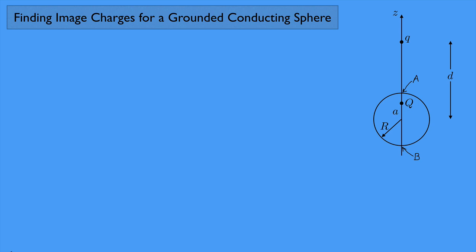You might wonder how I knew to put big Q on the z-axis. By symmetry, big Q has to be here — if I want the potential to be zero everywhere on this surface, it wouldn't make sense to have it elsewhere. Also, I can't put the image charge outside the sphere because I'm trying to calculate the potential outside the sphere, and you can't put image charges where you're trying to calculate the potential. So it has to be somewhere inside, and by symmetry, it only makes sense to be on the z-axis.